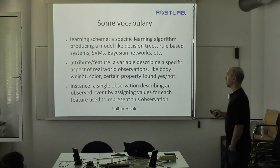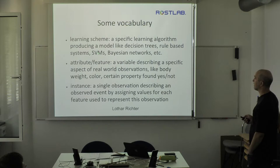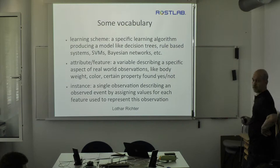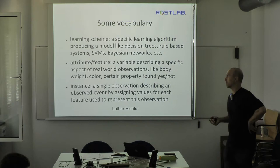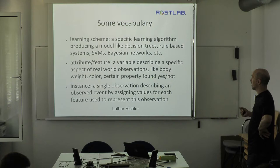In the literature, 'learning scheme' is used as an abstract term for a machine learning algorithm. An algorithm is the implementation or more realistic version of a learning scheme. Examples include decision trees, rule-based systems, support vector machines, and neural networks. An attribute or feature — which are actually the same thing — are variables describing a specific aspect of real observations, like body weight, color, or whether a certain property is found or not.